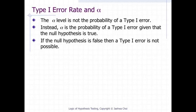It might seem that alpha is the probability of a type 1 error. However, this is not correct. Instead, alpha is the probability of a type 1 error given that the null hypothesis is true.